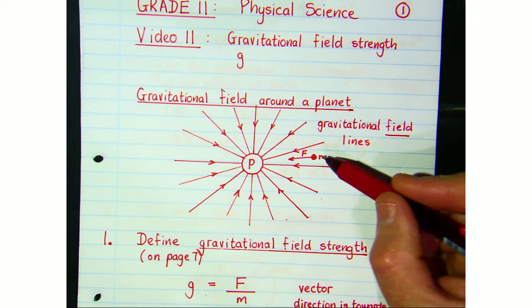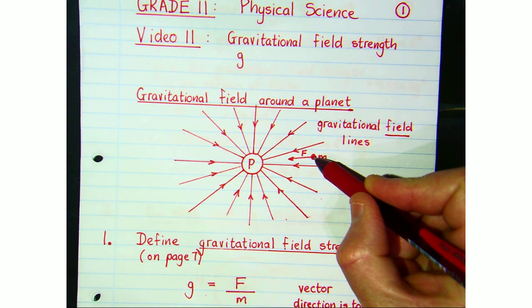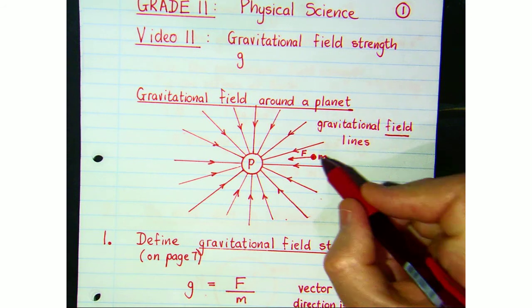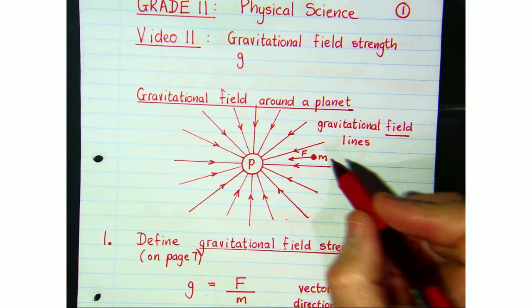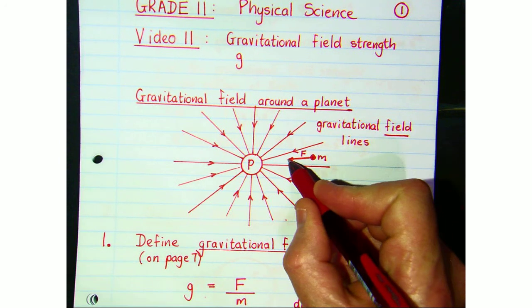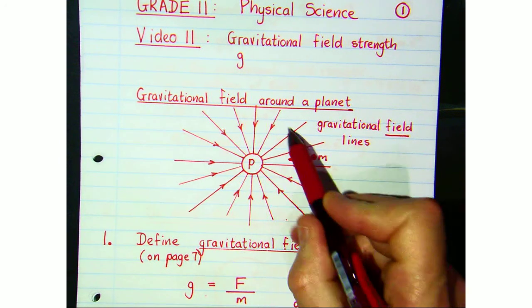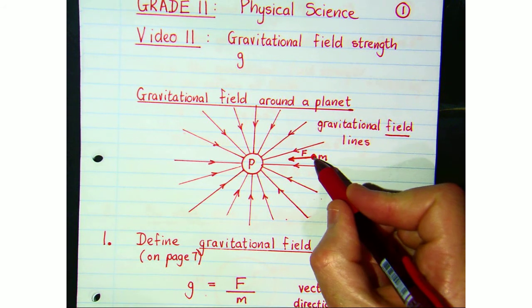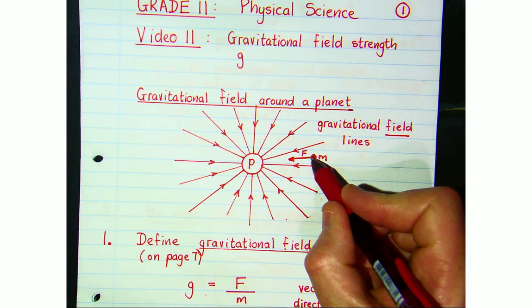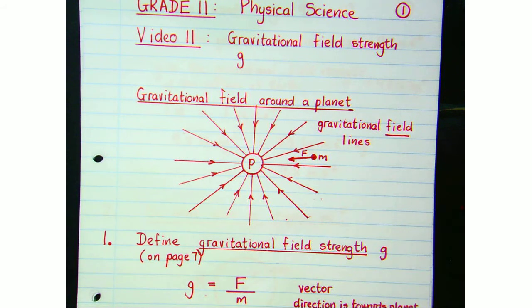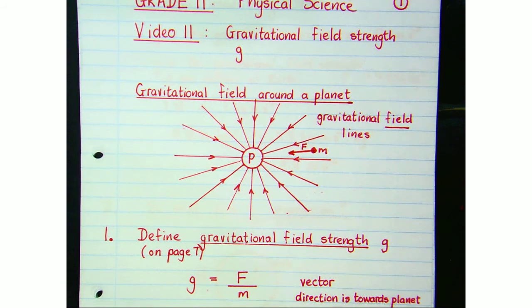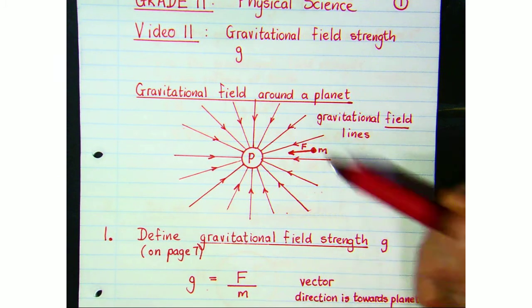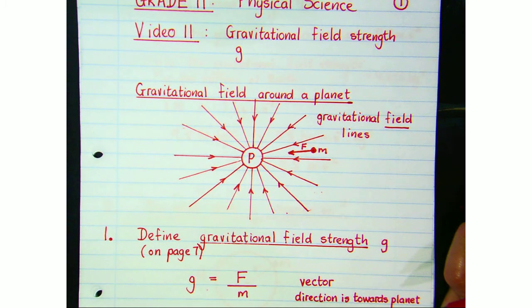If we place a mass in that gravitational field, it's going to experience a gravitational force of attraction. So this planet sets up a gravitational field, and when another mass comes into that field it experiences a gravitational force. Gravitational field lines have direction, so they are vector quantities.